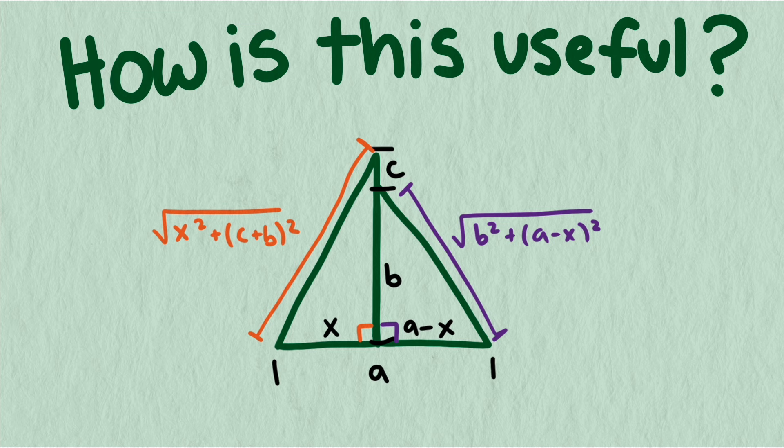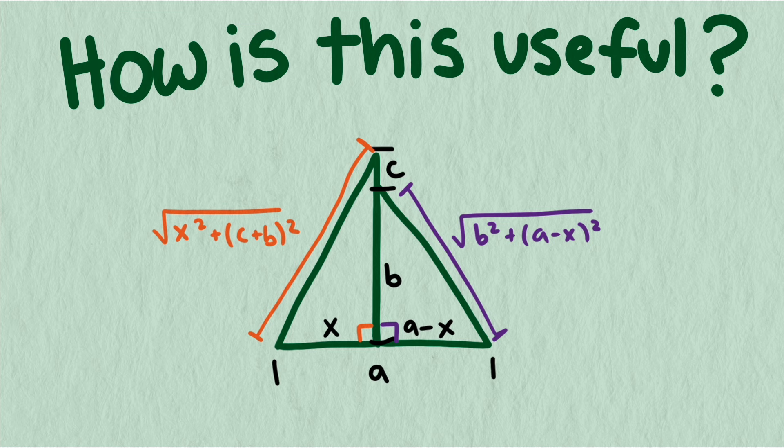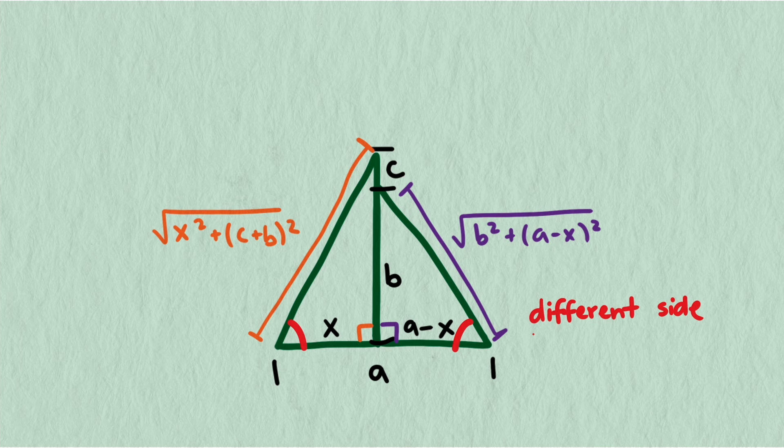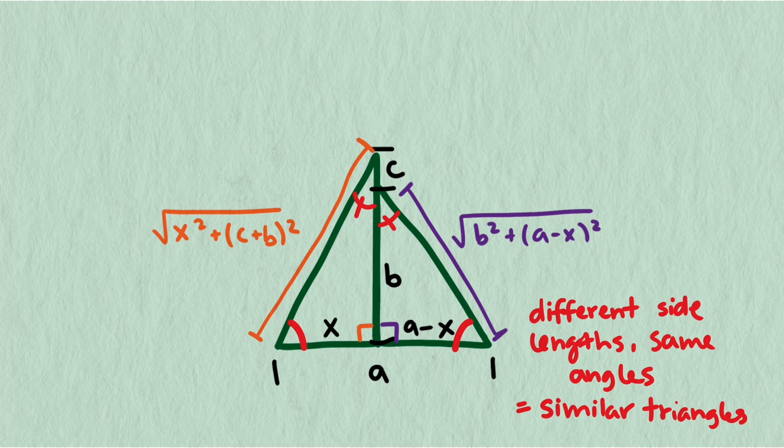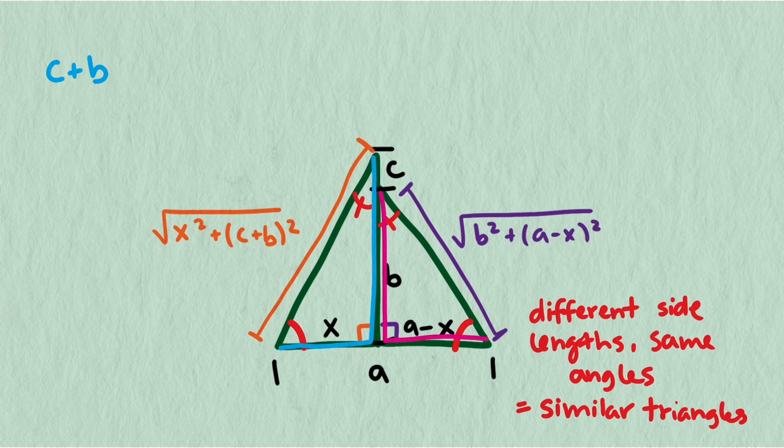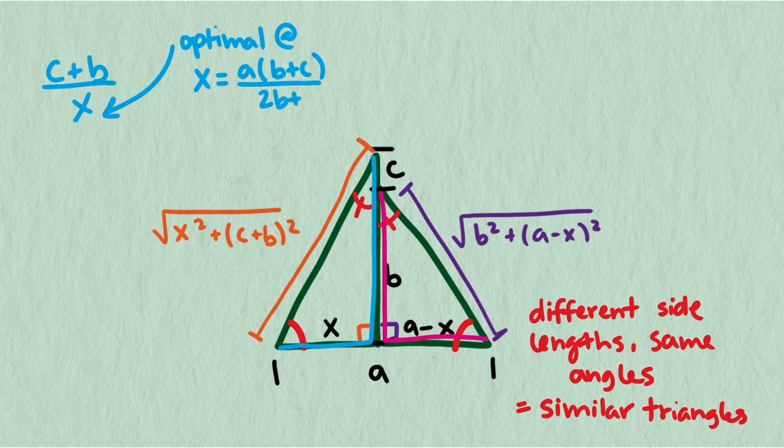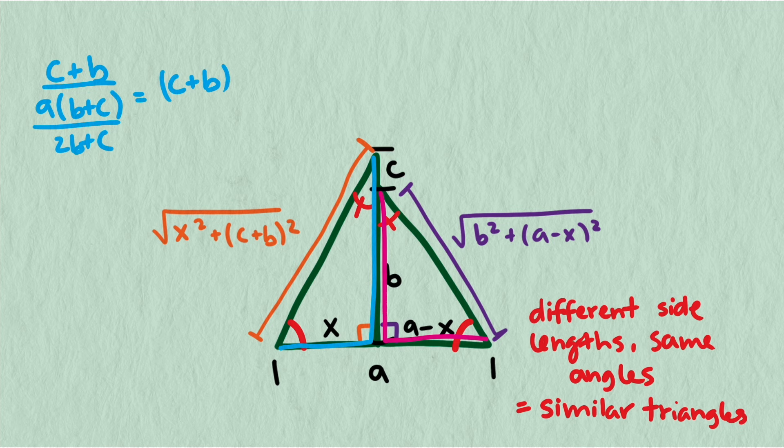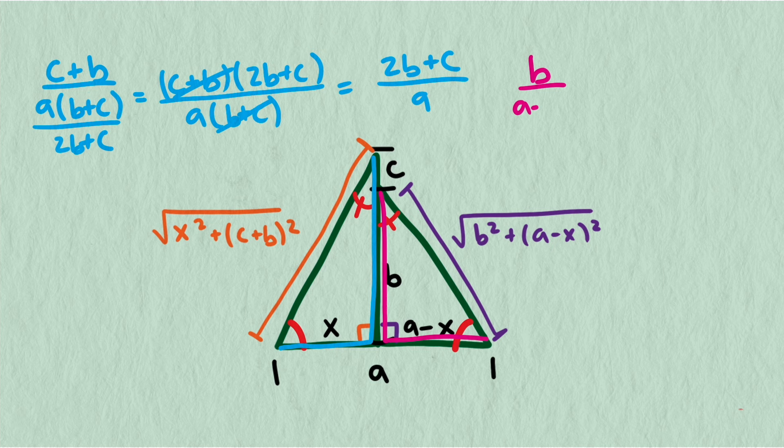We can use similar triangles. If these two angles are the same, then they must be similar triangles since they are both right triangles. So the ratio of two corresponding sides will be the same. Let's pick the two sides that don't have square roots to keep it simple and do heights divided by base. On the left, we get b plus c divided by x. We'll replace x with the optimal value, a times b plus c divided by 2b plus c. This ratio of sides simplifies to 2b plus c divided by a.